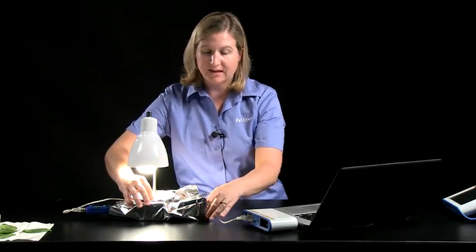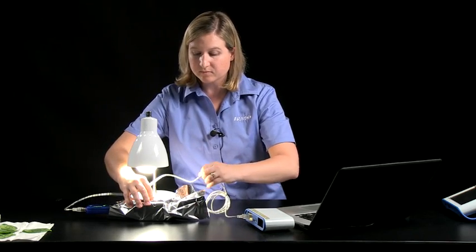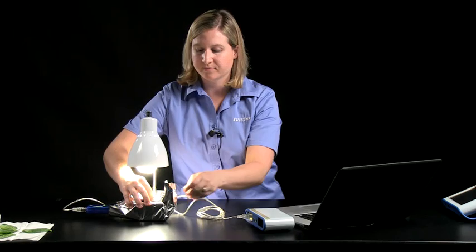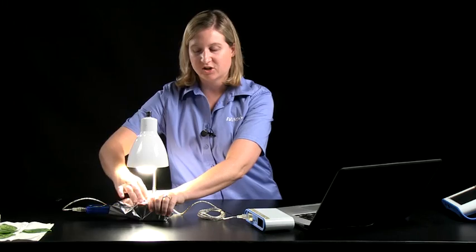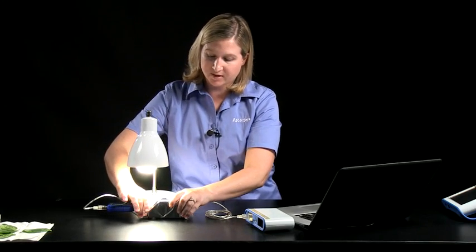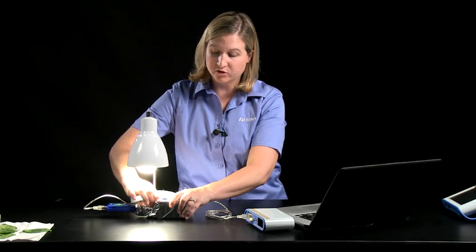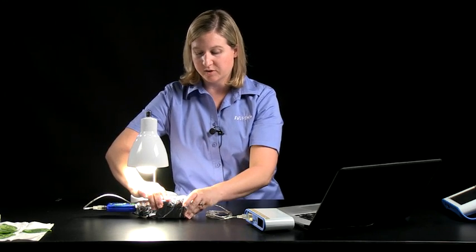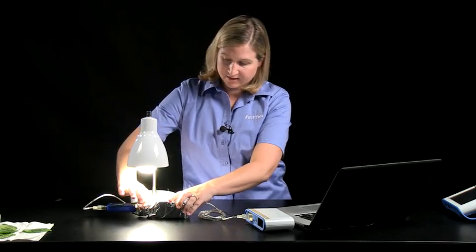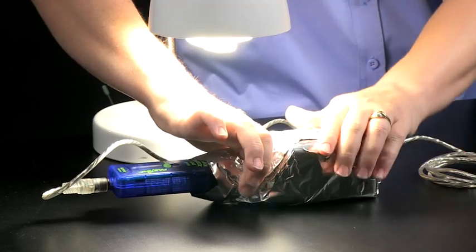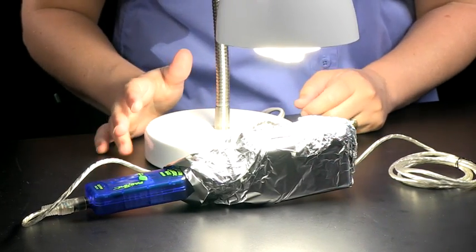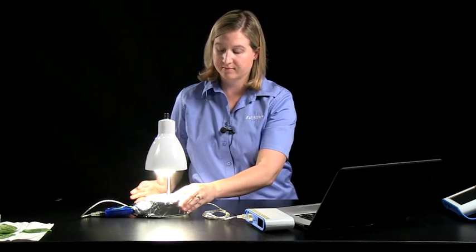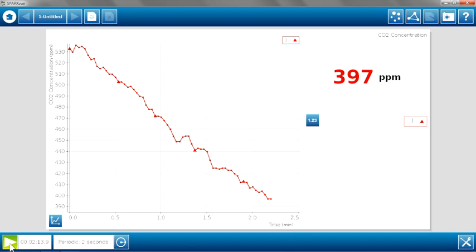Now you'll notice that I'm going to leave the light on. This will be a controlled variable. The compact fluorescent light should not provide too much heat to the system, but we'll leave it on just to control for temperature between the two parts of the investigation. So now that I've got the bottle sealed in foil so that the leaves are now in complete darkness, I'll leave my lamp adjusted just as before, and I'm going to begin data collection again just by clicking in the lower left side here.